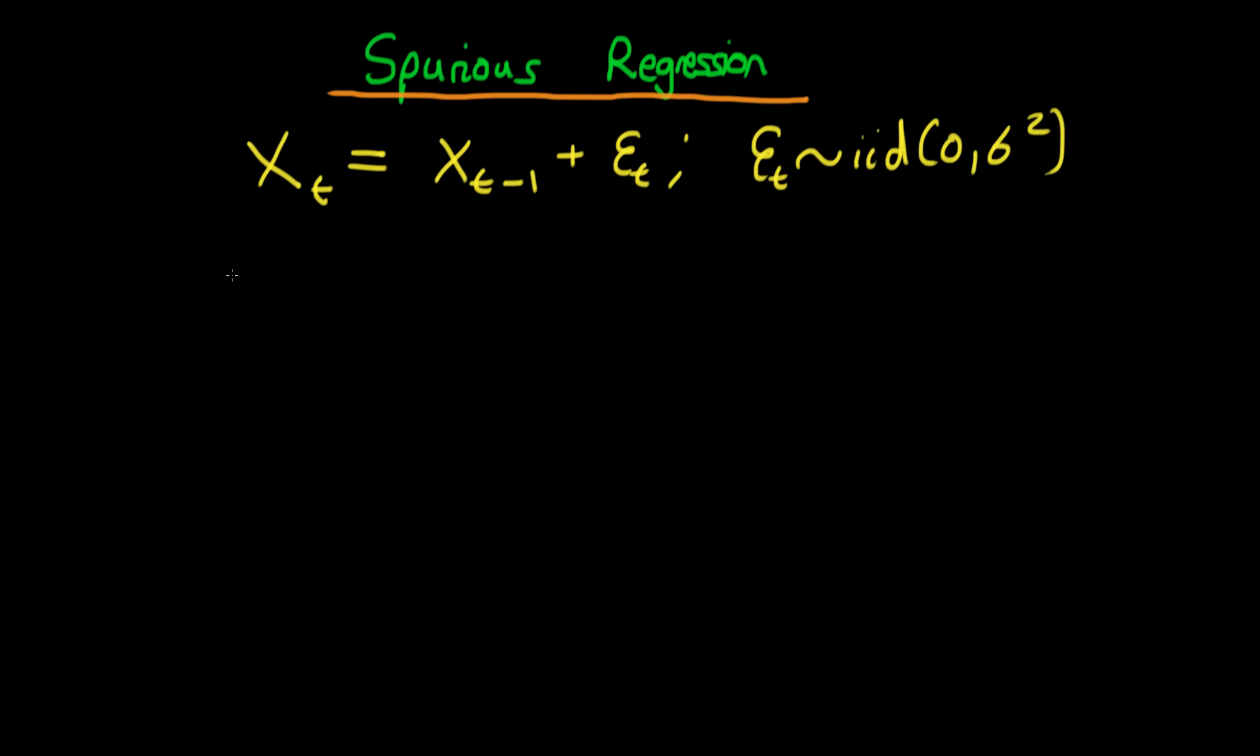And then let's say I have another process Yt, and Yt also follows a random walk. So Yt is equal to Yt minus 1 plus some other error term, and again this particular error term is iid with a mean of zero and a variance of sigma squared.